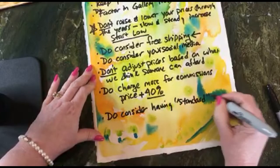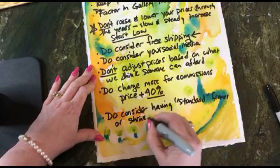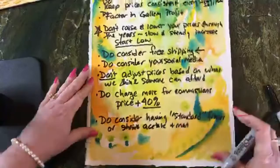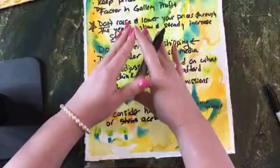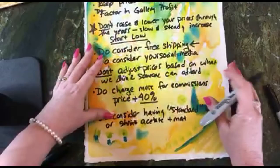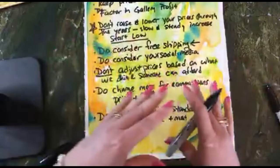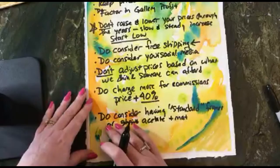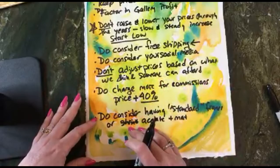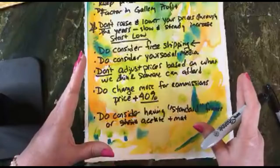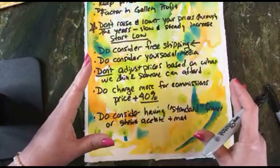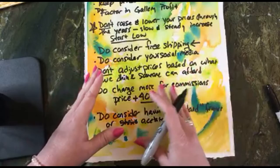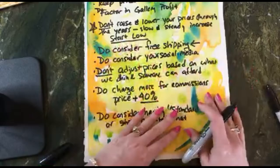Consider having standard frames, or acetate plus a mat for your standard sizes. Blick has nice roadshow acetate packages with foam core and a mat — you can slip artwork right in, they're inexpensive, and the artwork is protected. Factor that cost into your pricing. When selling through a gallery, remember the gallery will take their commission from the retail price, so build all costs in before you set that final number.